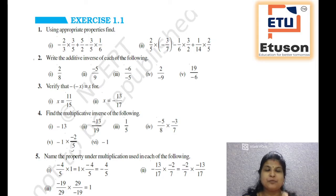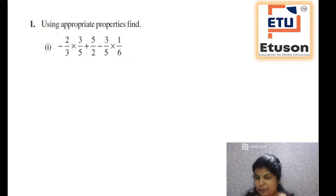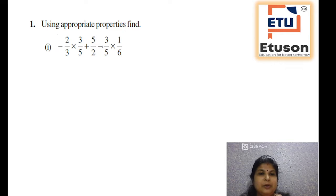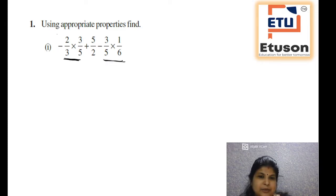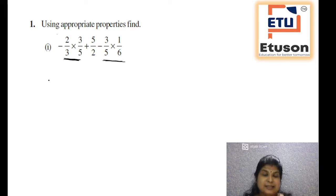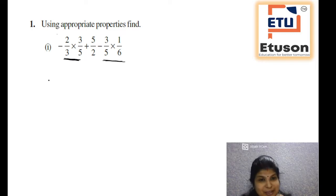Question 1 says: using appropriate properties, find the following. In question number 1, I am going to solve this particular problem. The problem is minus 2 by 3 into 3 by 5 plus 5 by 2, minus 3 by 5 into 1 by 6. You can see 3 by 5 is common in two groups. So what we will do first? We will reorder it — change the sequence so that it will be easier to solve the problem. Which law are we going to use? It is commutativity — the commutative law.